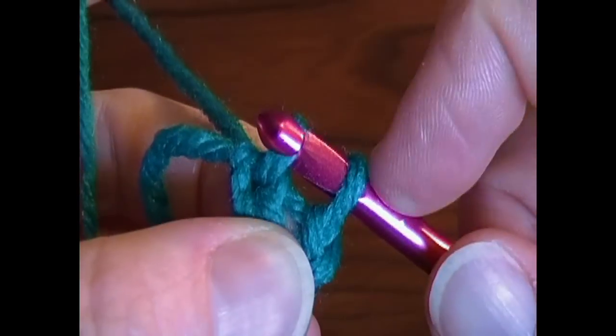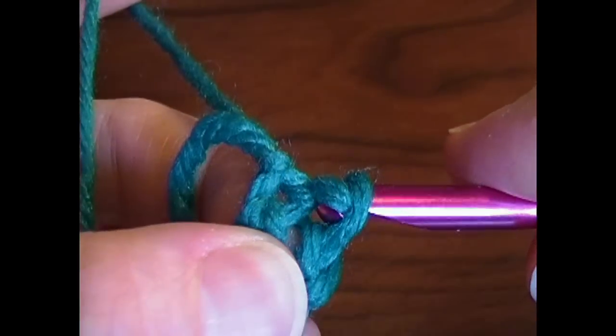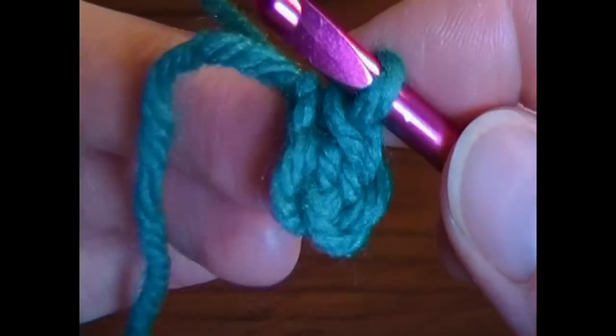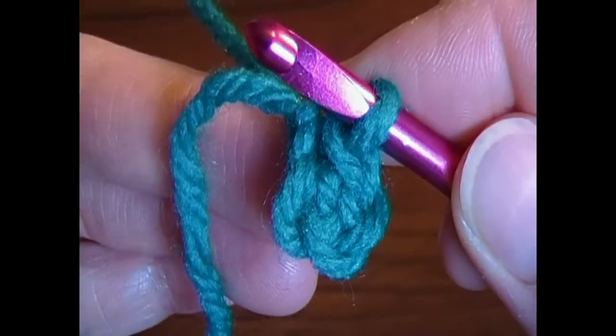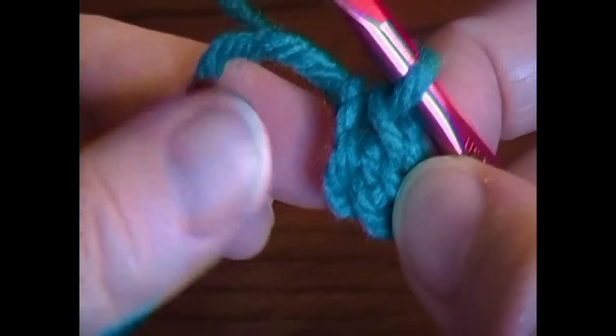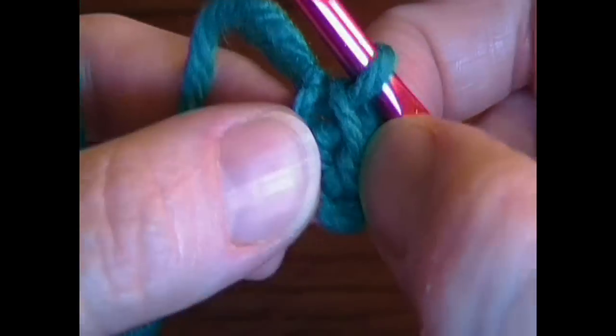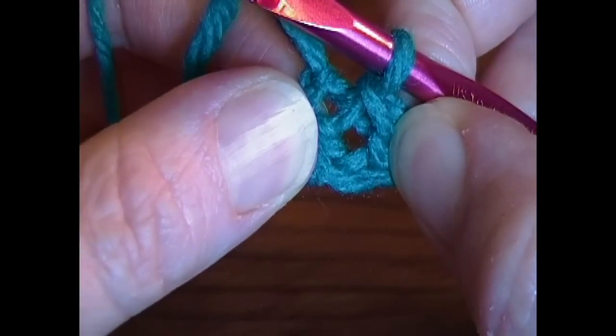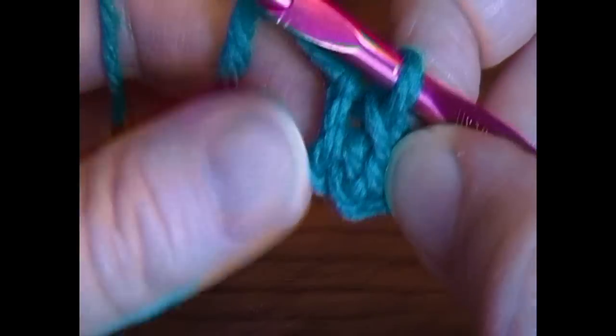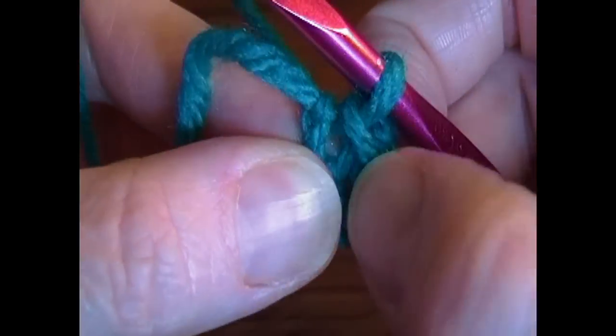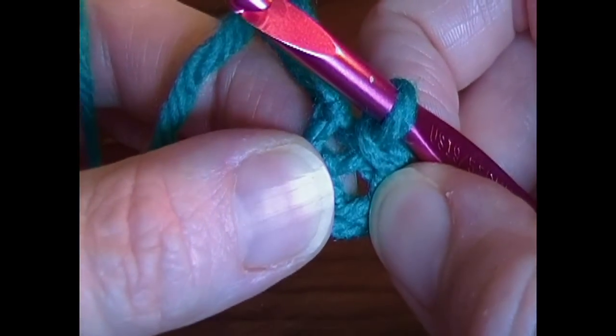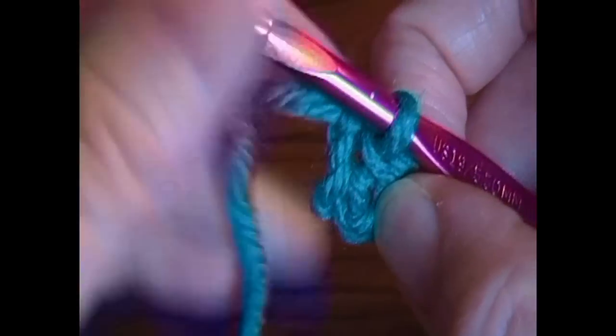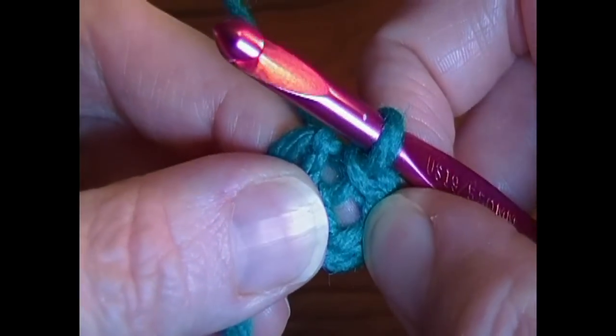And see that first loop, you want to bring it through the second loop by pulling it down and through. Now if you look carefully, it doesn't look like a loop, does it? But there is a hole in the middle of that circle. If you pull it out, you can see it. And I do have a video that is a tip on how to find that hole and how to keep track of it. So that is our center circle.